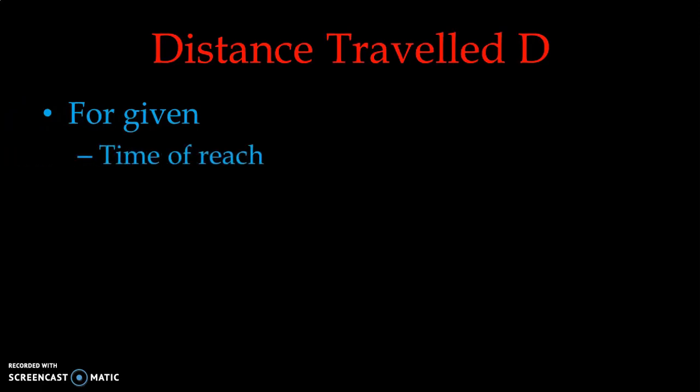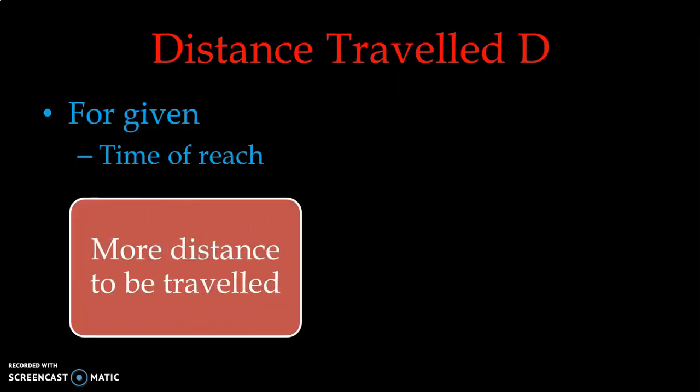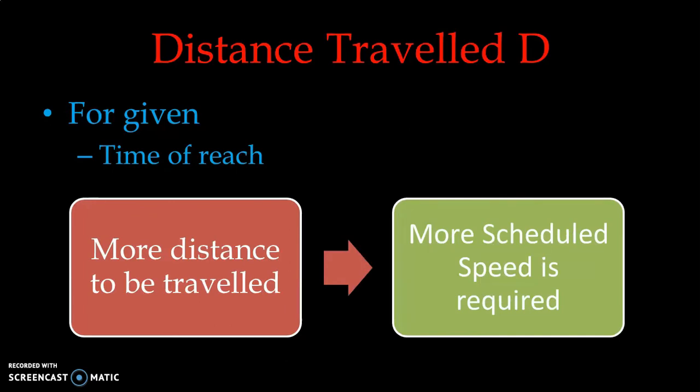The second parameter is distance traveled, denoted by d. Scheduled speed is a ratio of distance divided by time, and we include stoppage time as well. So scheduled speed is directly proportional to the distance to be traveled between two stops. For a given time of reach, more distance between two stops means higher scheduled speed is required. If distance increases and time of reach is maintained constant, a higher scheduled speed is needed.